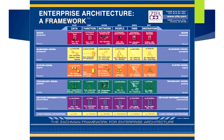The Zachman framework really is a guide for organizing information, and the general data collection and organization shows this. Completing the framework doesn't necessarily answer any architectural questions, but identifies the data that needs to be made. This is an important distinction to make, as it makes clear the limitations of the Zachman framework — it can't be used as the only tool for enterprise architecture. More modern methodologies like the Open Group Architecture Framework, or TOGAF, provide a more robust phased approach to building an enterprise architecture.